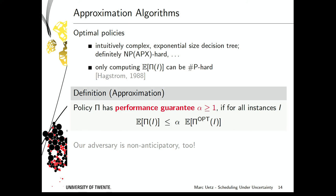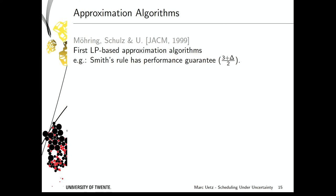Let me discuss approximation algorithms for these scheduling problems. We showed in an earlier paper that constant-factor approximation algorithms exist as long as you have an upper bound on the coefficient of variation of the random variables. The bound is (3 + δ)/2. For instance, exponentially distributed processing times have coefficient of variation exactly 1, giving a 2-approximation. The deterministic special case gives 3/2. This result holds for Smith's rule on identical parallel machines.